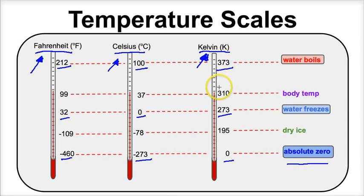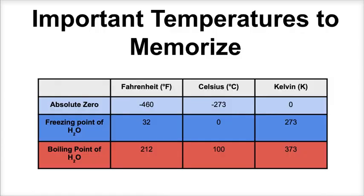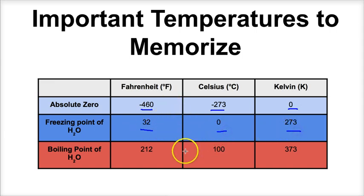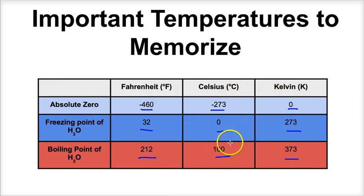So these are the three main temperature scales that we're going to talk about, and in a couple of slides we're going to learn how to convert between them. But let's first take a look at a chart to help memorize these different important temperatures on each scale. This table shows the important temperatures you're going to have to memorize in chemistry: absolute zero is negative 460 Fahrenheit, negative 273 degrees Celsius, or 0 K; the freezing point of water is 32 degrees Fahrenheit, zero degrees Celsius, or 273 K; and the boiling point of water is 212 degrees Fahrenheit, 100 degrees Celsius, or 373 K.